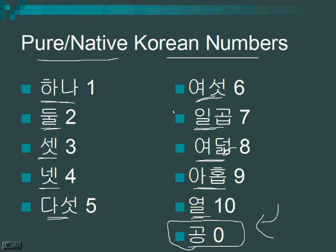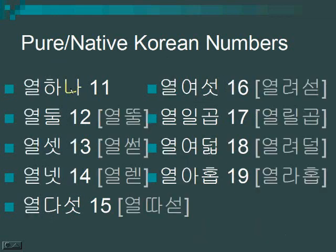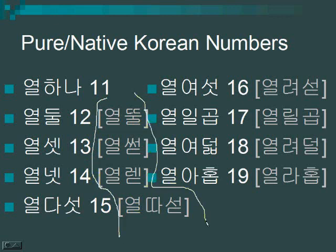When you want to go above ten — eleven, twelve, thirteen, whatever — with the ten spot, you just want to put ten in the number. For example, this is what it's going to turn into. However, there are certain sound changes that are put in brackets for you. These aren't how they're written, but it's how they're said.